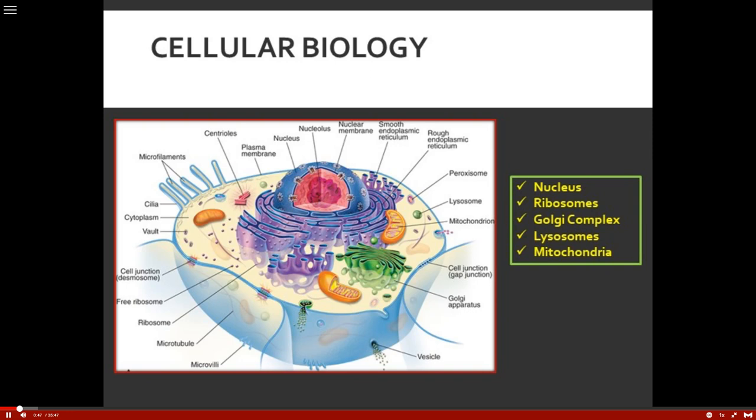For example, when we get into heart failure, we talk about tissue perfusion, and that's all related to the inability to supply that cell with the needed nutrients as well as oxygen. So we're going to see what happens to that cell — that hypoxic injury — it's all about the effects it's going to have on that cell.